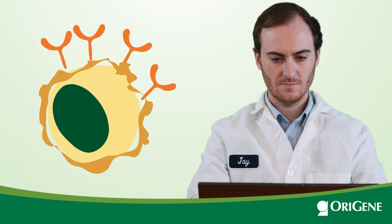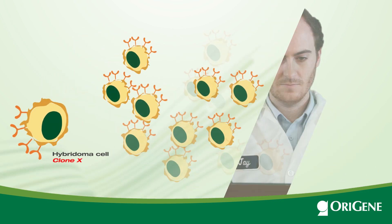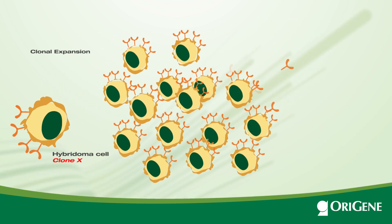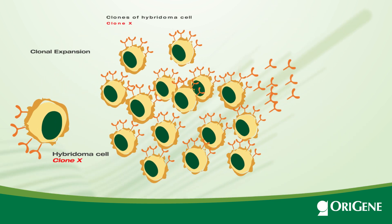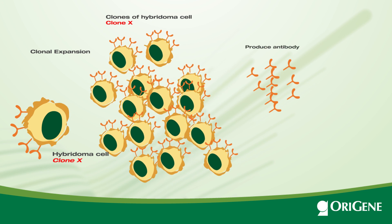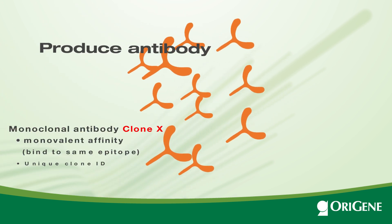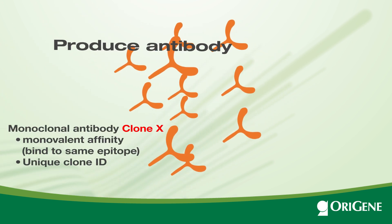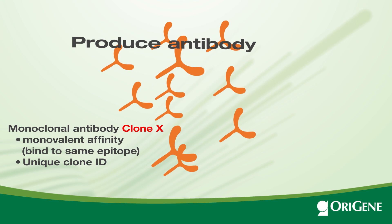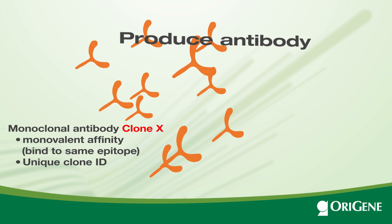Monoclonal antibody is produced from a single hybridoma clone. The clone ID is also used to name the antibody produced. Each monoclonal antibody of the same ID is identical in structure, binding activity, and specificity.